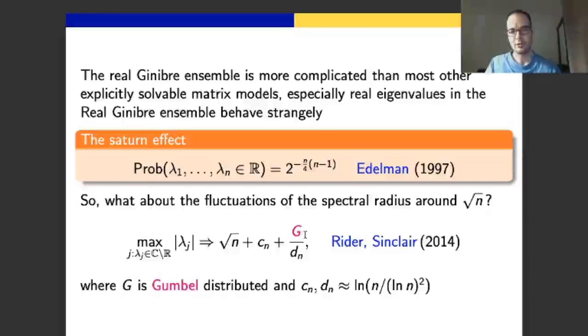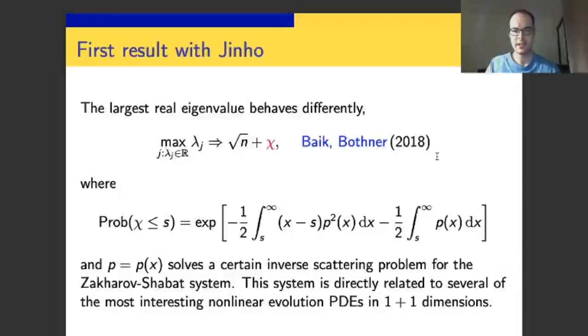What happened on the real axis was unknown until our work with Jinho in 2018, roughly two years ago. What we did, we computed the central limit theorem for the largest real eigenvalue. You could do the same thing for the smallest one. There's an obvious symmetry around the vertical axis. And what we did is we computed the distribution function of this limiting random variable χ.